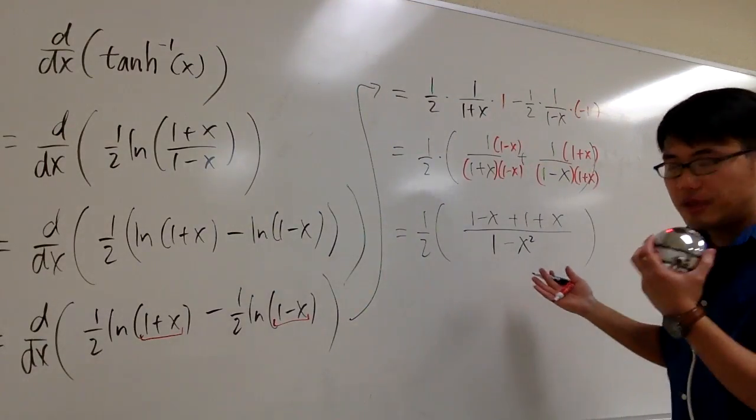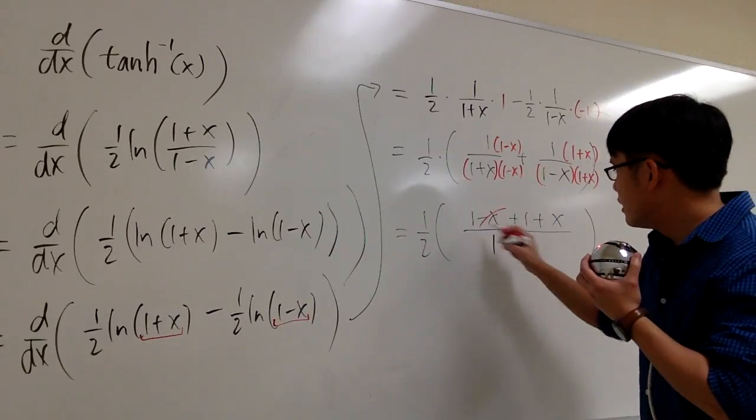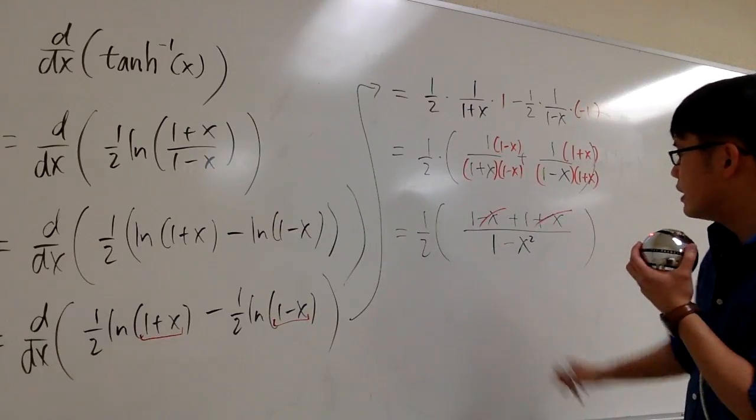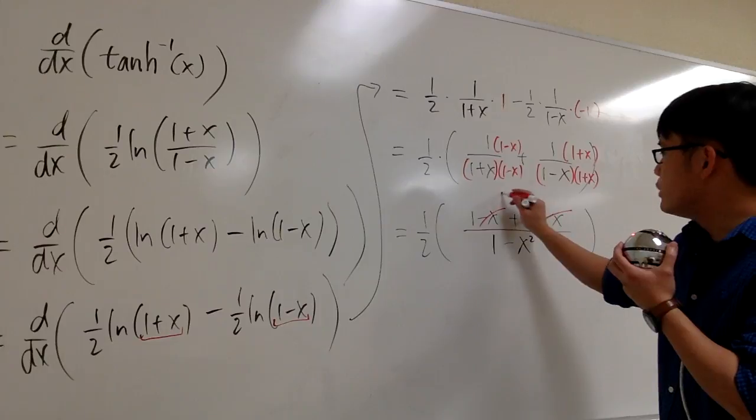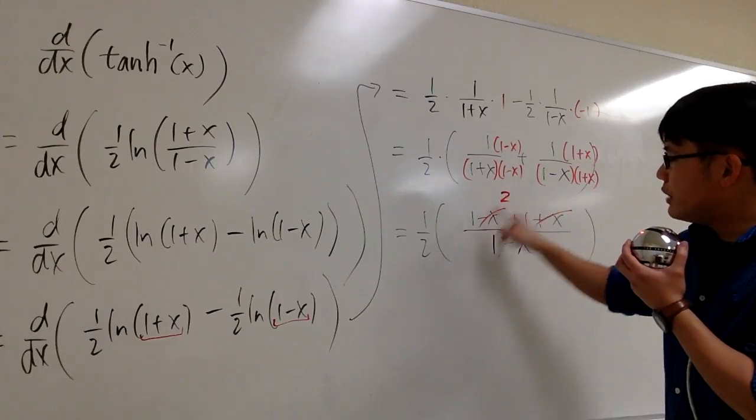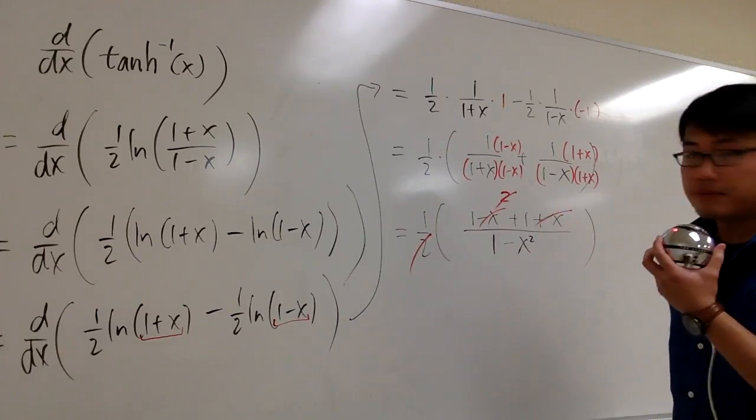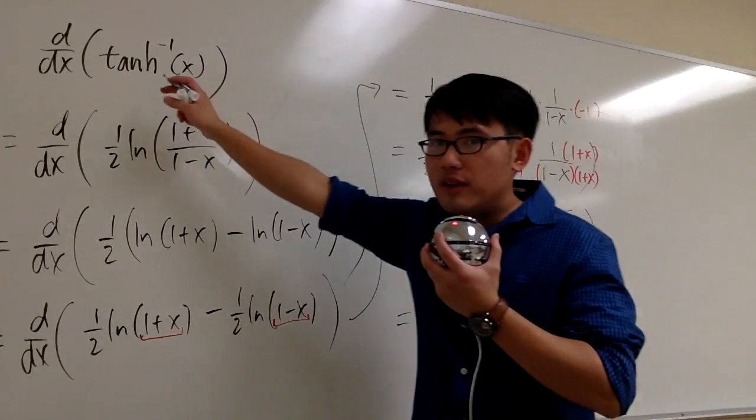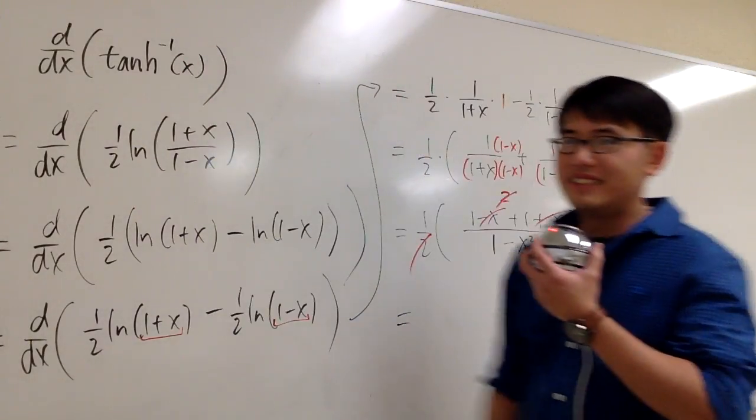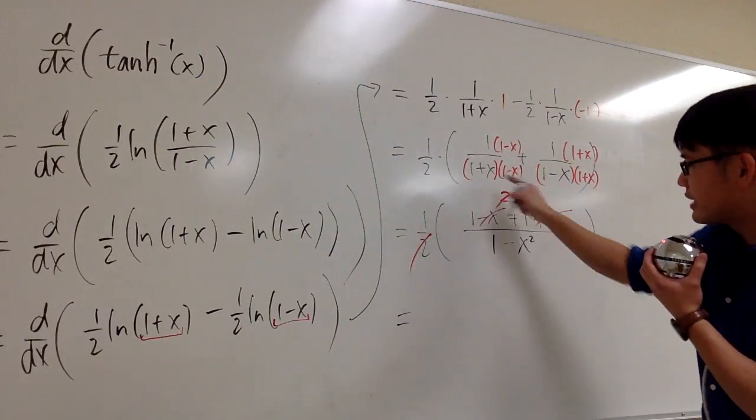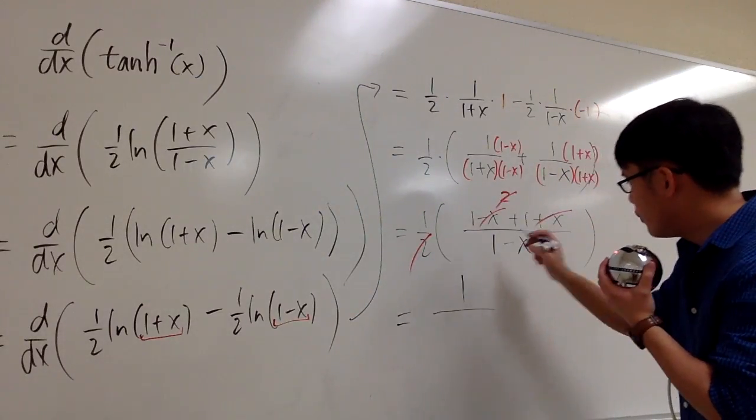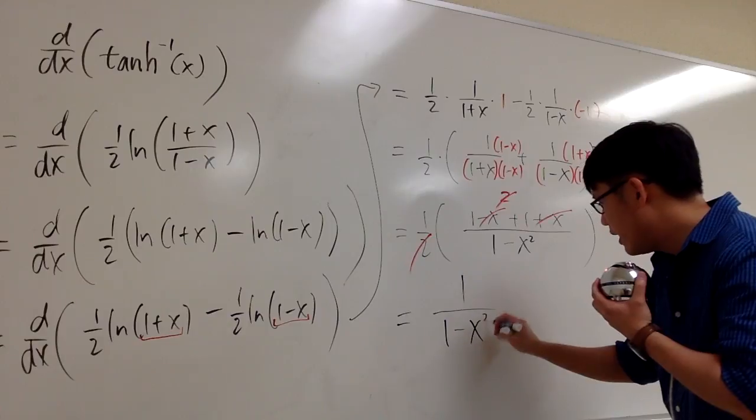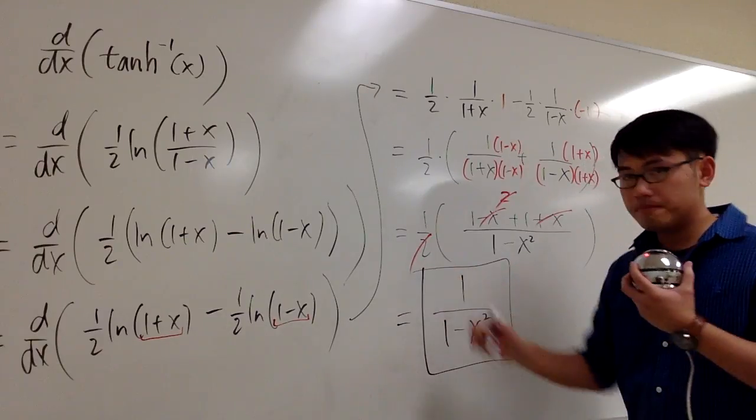Of course, we can simplify this much better. Negative x plus x cancels. And 1 plus 1 is, of course, equal to 2. But this 2 and that 2 can cancel out. Final answer. The derivative of inverse hyperbolic tangent x is nothing but just everything on the top. It's just 1 over 1 minus x squared. This is it.